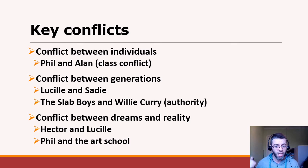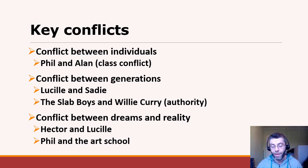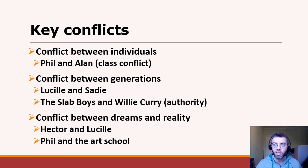Your notes would logically all be interconnected in the same way. Conflict between individuals to look for: one is Phil and Alan, and you could certainly make an argument for conflict between Hector and Phil and Spanky — it's a bit more subtle and varies as it goes through. There are also generational conflicts: look at the different views of Lucille and Sadie, the different attitudes of the slab boys and Willie Curry. That's a conflict that might come up as a theme — attitudes to authority — and one of the ways it's represented is through conflict between people in positions of authority and those who don't have it, like Willie Curry and the slab boys.